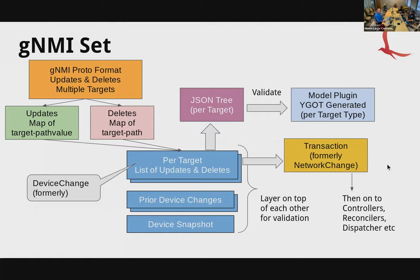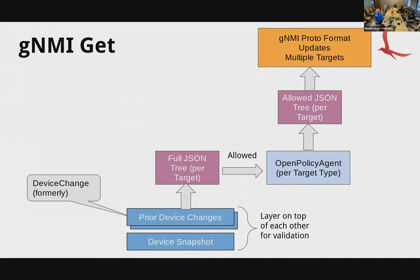For GNMI get, we're asking for a specific subset of the configuration — particular devices, particular interfaces, or particular leaves. The layering is done in real time: we take the prior device changes and the device snapshot, layer them on top of each other, and produce a full JSON tree per target.